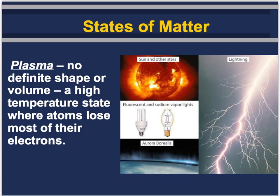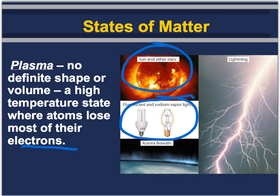The fourth state of matter, which isn't covered in regular chem, is plasma. Plasma has no definite shape or volume. It exists at high temperatures where atoms lose most of their electrons and change some of their properties. Examples include the sun and other stars, the lights in our homes, the aurora borealis — the northern lights seen over Alaska — and lightning.